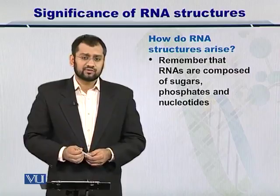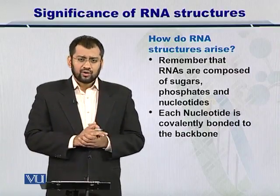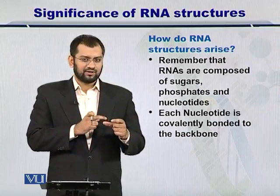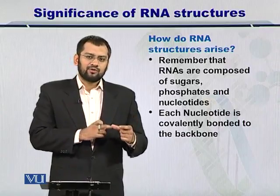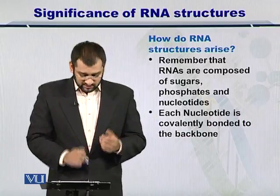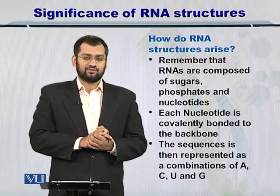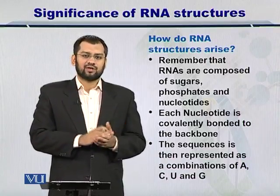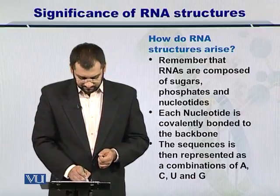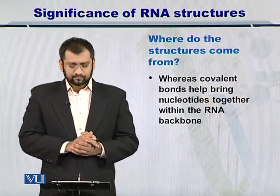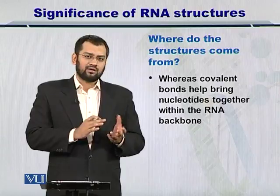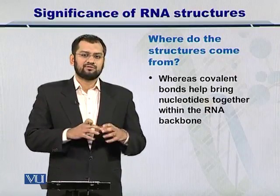So where do the structures come from? Each of the nucleotides is covalently bonded to the ribose sugar — remember, it's ribose for RNA. So if all nucleotides are covalently bonded, where is the structure coming from? The structure comes from the hydrogen bonds that can be formed between the nucleotides covalently attached to the sugar backbone of the RNA. It is very important to look at how these hydrogen bonds are formed and what complex structures they can give rise to.